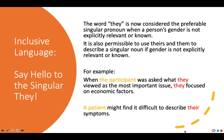It is also permissible to use 'theirs' and 'them' to describe a singular noun if their gender is not explicitly relevant and known. For example, in the sentence 'when the participant was asked what they viewed as the most important issue, they focused on economic factors,' the noun 'participant' is singular. In APA 6 we would have used 'he/she,' but in APA 7, unless their gender is explicitly known and relevant, we should use 'they.' Similarly, in 'a patient might find it difficult to describe their symptoms,' 'their' is used as a possessive pronoun for the singular noun 'a patient.'